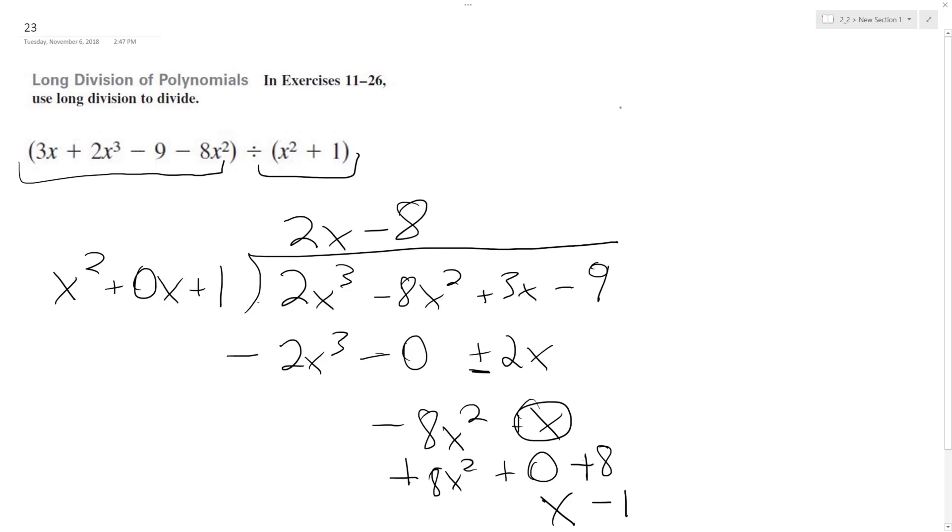So our final solution is 2x minus 8 is the result we get, plus x minus 1 over x squared plus 1 as our remainder.